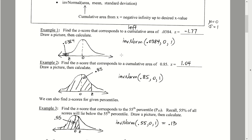In example one, find the z score that corresponds to a cumulative area of 0.0384. It's good practice to draw a sketch. A cumulative area of 0.0384 is a very small amount of area to the left, so we shouldn't shade too much. This indicates a rather small — meaning negative — z score, to the left of zero. We should expect a negative z score out of this.